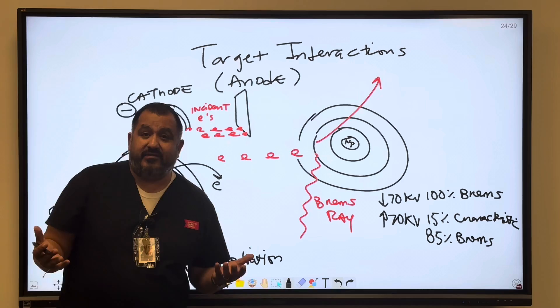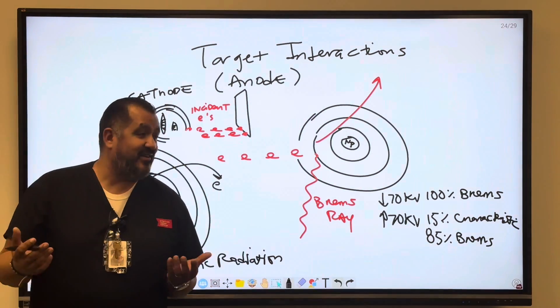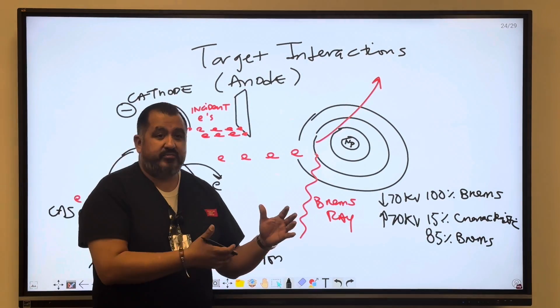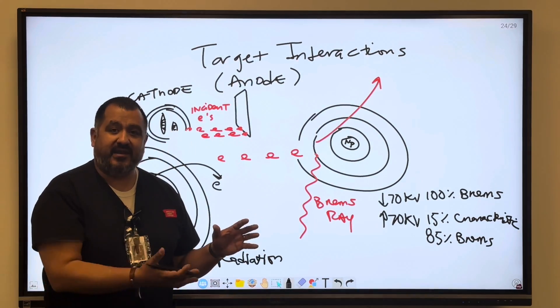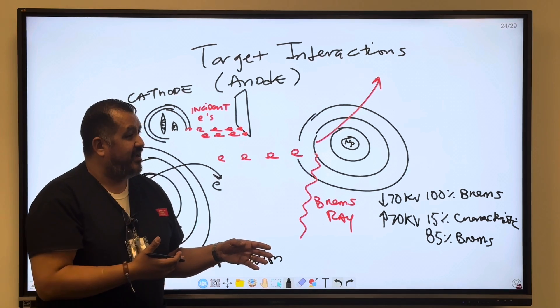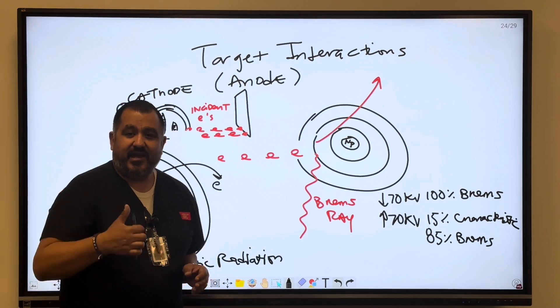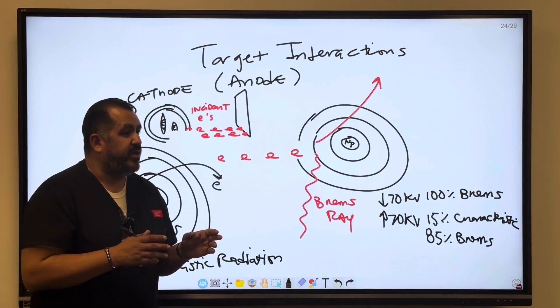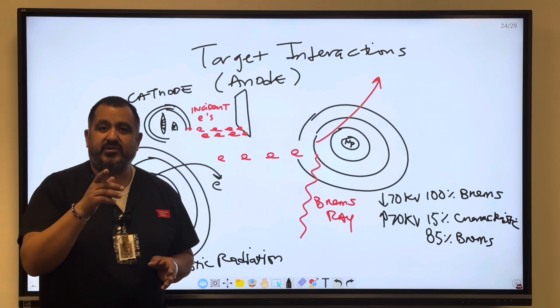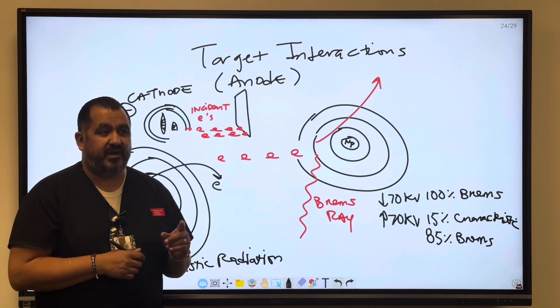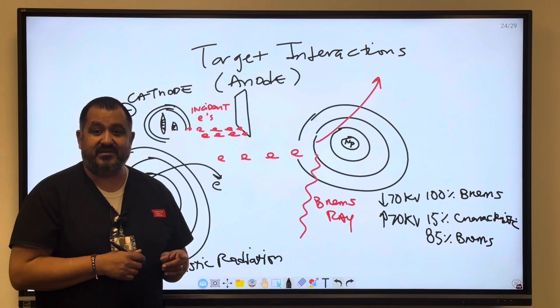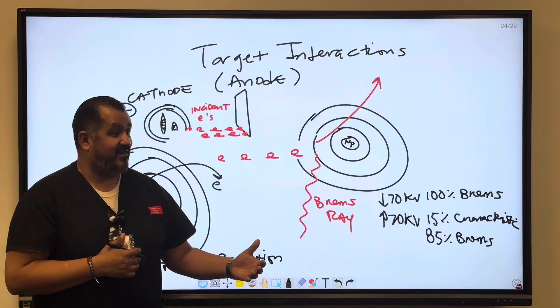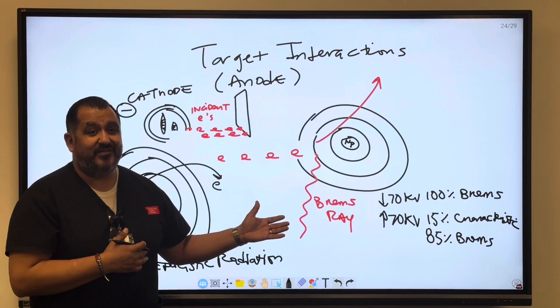So do we really care in the field what x-rays are being created? No. We get the patient, correct patient, correct part. We're cordial, we're respectful. We try to do it with the least amount of pain and discomfort that we can do. We set our mas, our kV, get our distance, and we make the exposure. You're not thinking about bremsstrahlung characteristic. But when you guys get out there in the field and you guys are doing clinical rotations, I want you to think about characteristic and bremsstrahlung because you're going to think about it, you're going to have more recollection of that event that's occurring. But as a tech in the field, we don't think about this. But this is the difference between bremsstrahlung and characteristic.